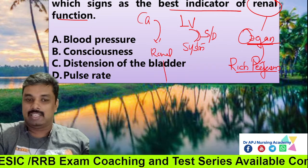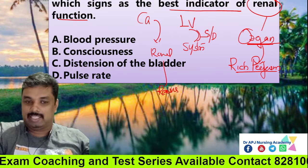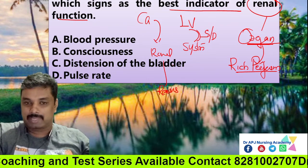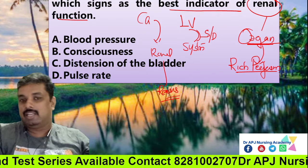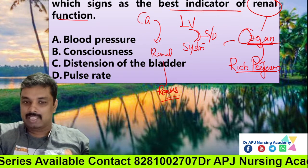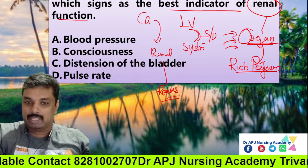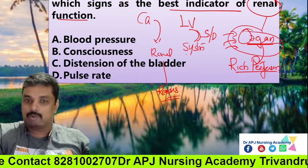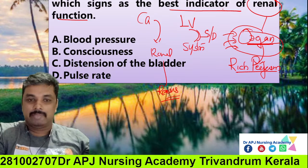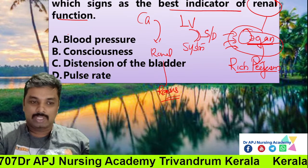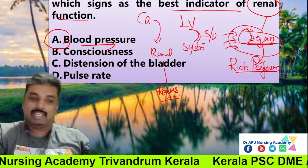Cardiac output is indirectly related to renal function. If we have adequate cardiac output, we maintain pressure, which is related to renal blood flow. This in turn affects renal tissues and prevents renal organ damage. So the best indicator of renal function is blood pressure — that is the correct answer.